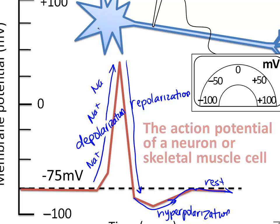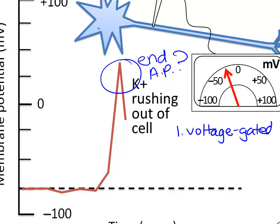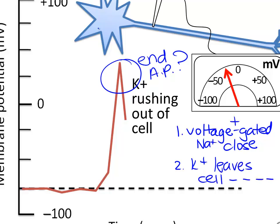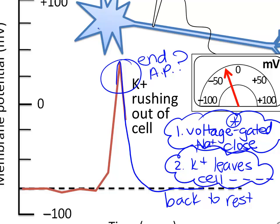The action potential ends because the voltage-gated sodium channels close off and inactivate, and potassium leaves the cell — stopping the positive charge from coming in, letting potassium leave, and returning to resting value. We call that repolarization.